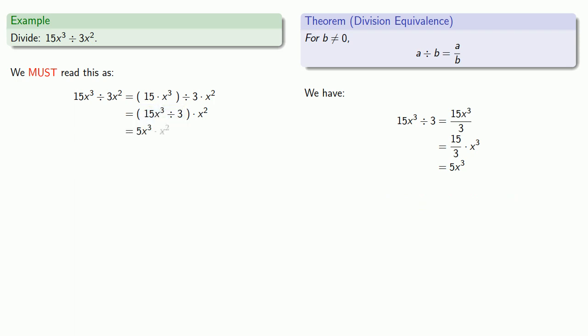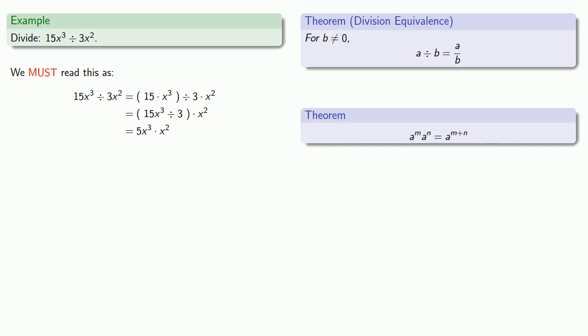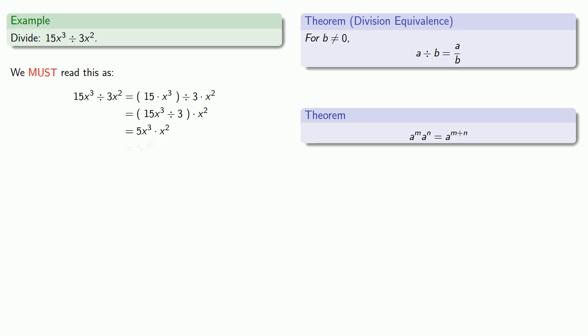And we still have our x squared. Finally, we can multiply x to the third times x to the second — remember, in exponential expressions, if the base is the same, we can add the exponents. So we can simplify this last product to be 5x to the fifth.